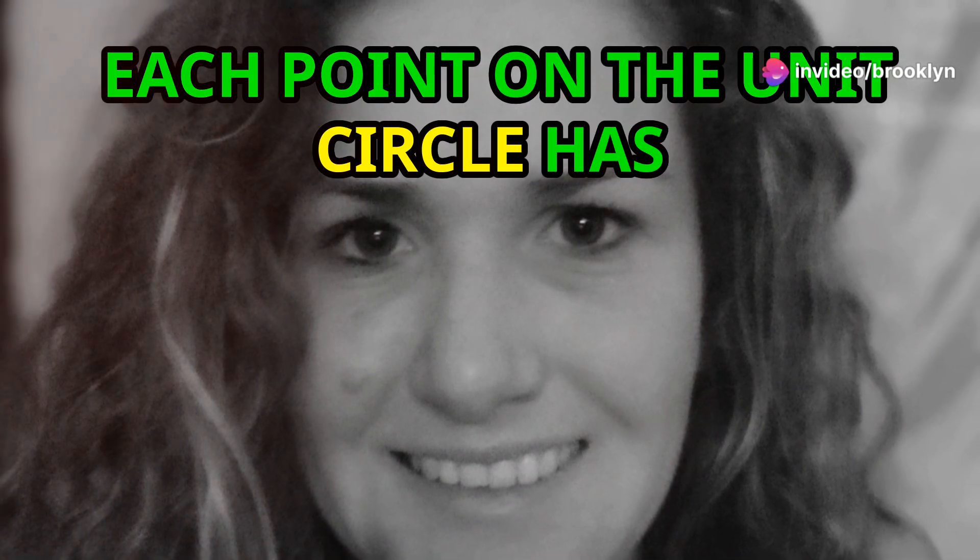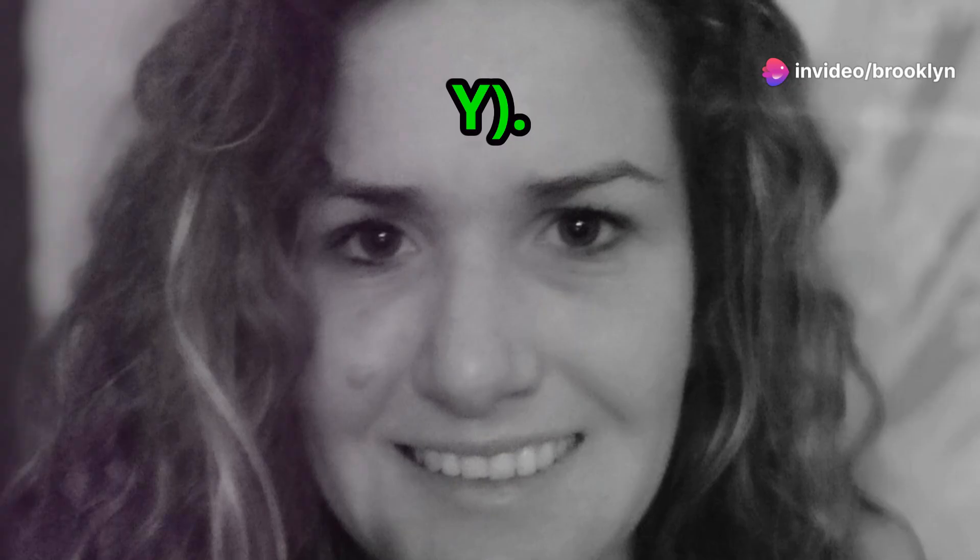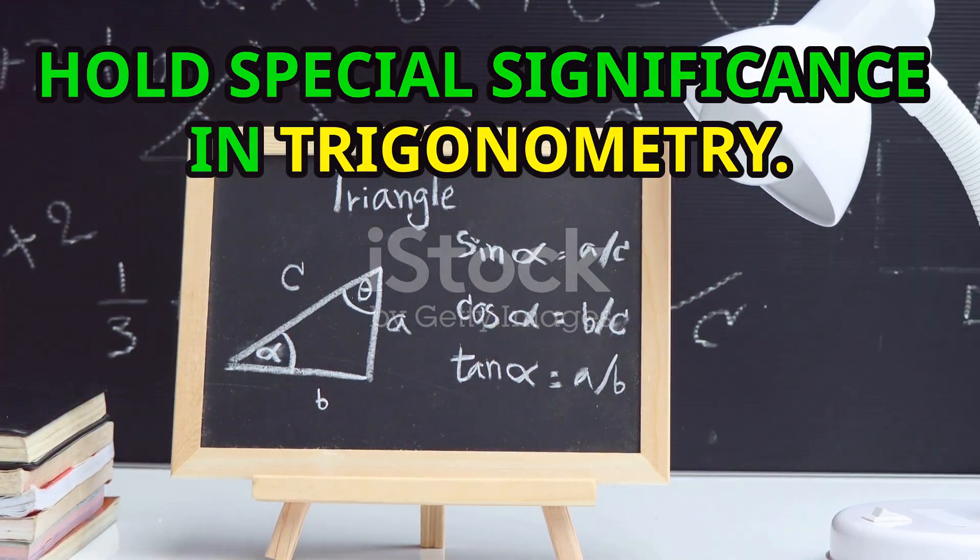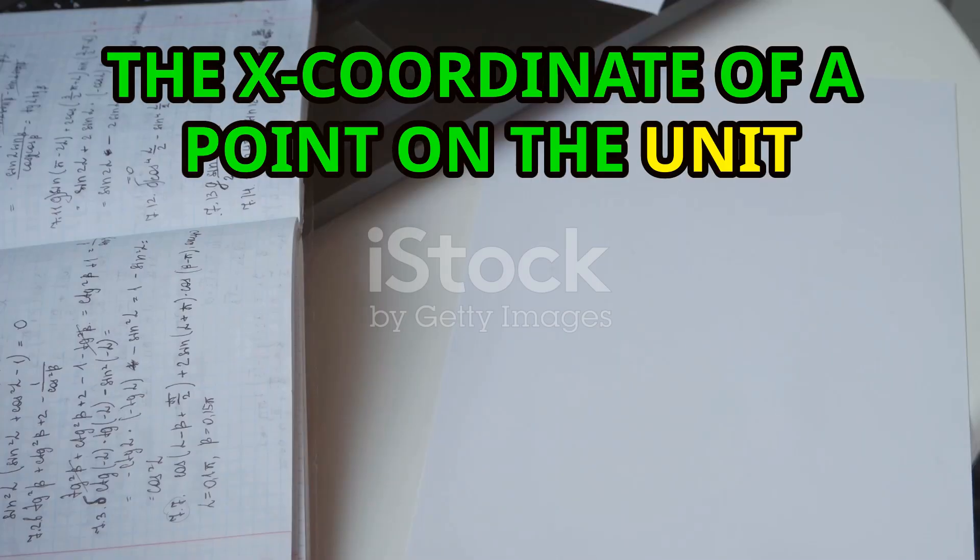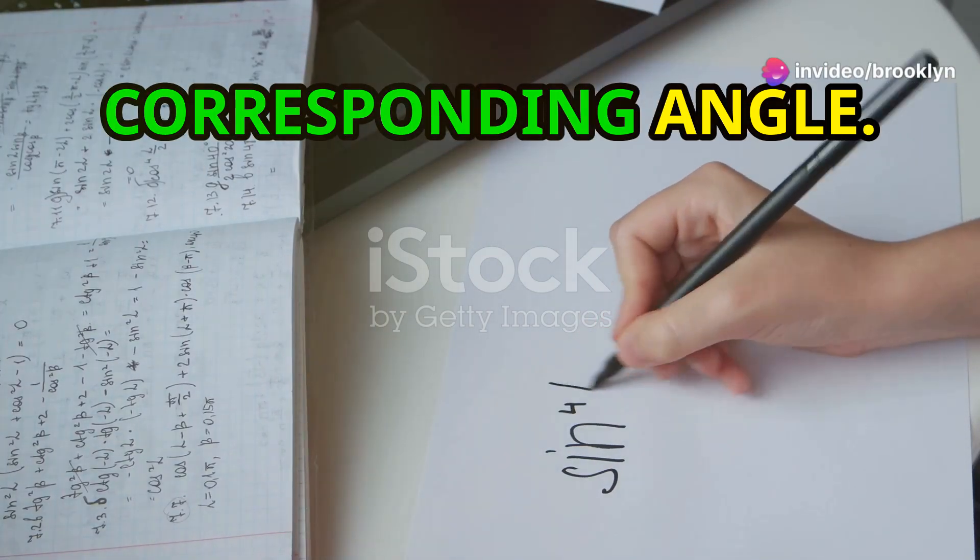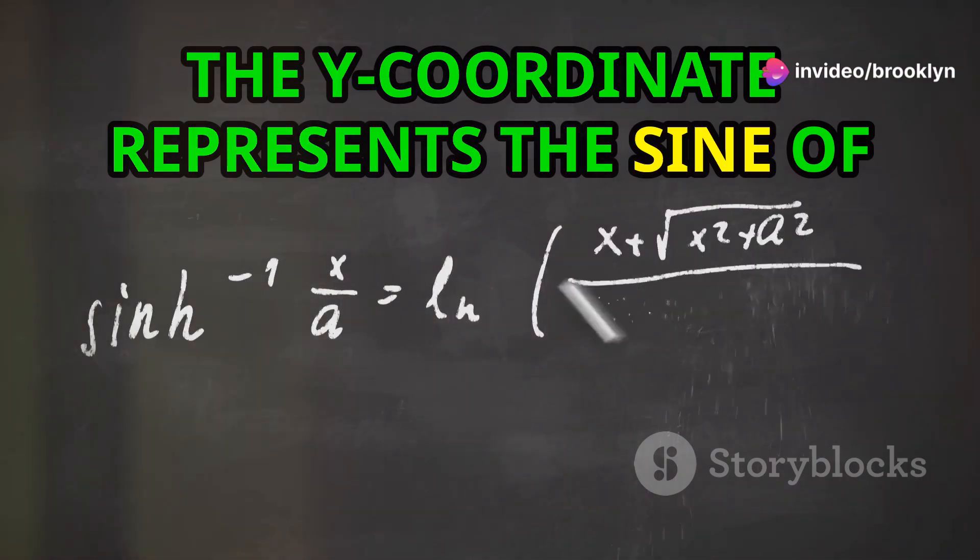Each point on the unit circle has coordinates (x, y). These coordinates are not random. They hold special significance in trigonometry. The x-coordinate of a point on the unit circle represents the cosine of the corresponding angle. The y-coordinate represents the sine of the angle.